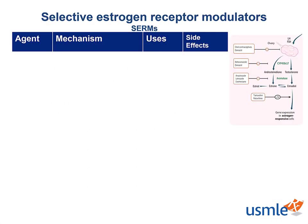Selective Estrogen Receptor Modulators, also known as SERMs, are drugs that have different effects on estrogen receptors depending on where they are located. Basically, they can be agonist or antagonist depending on where they bind.